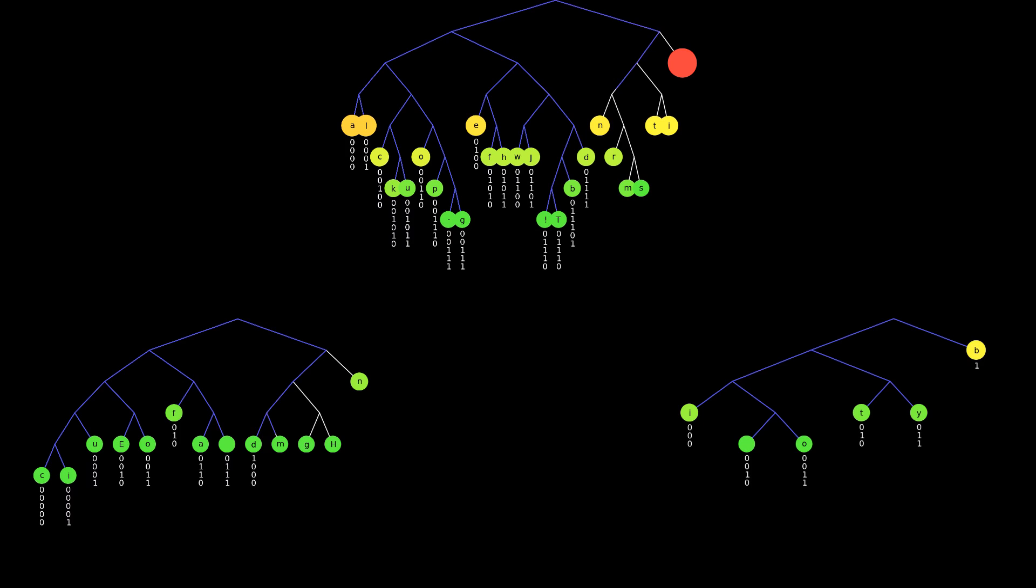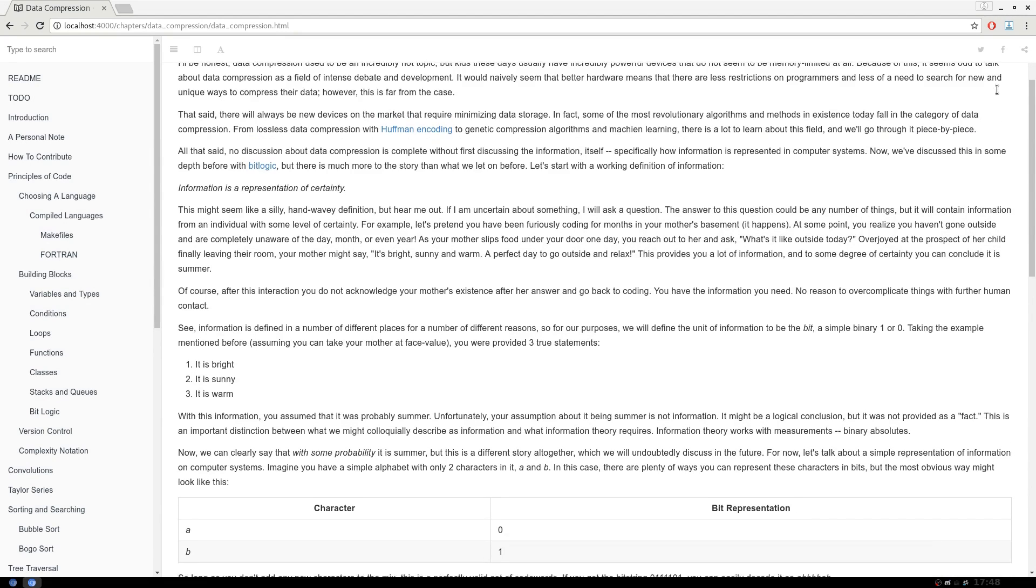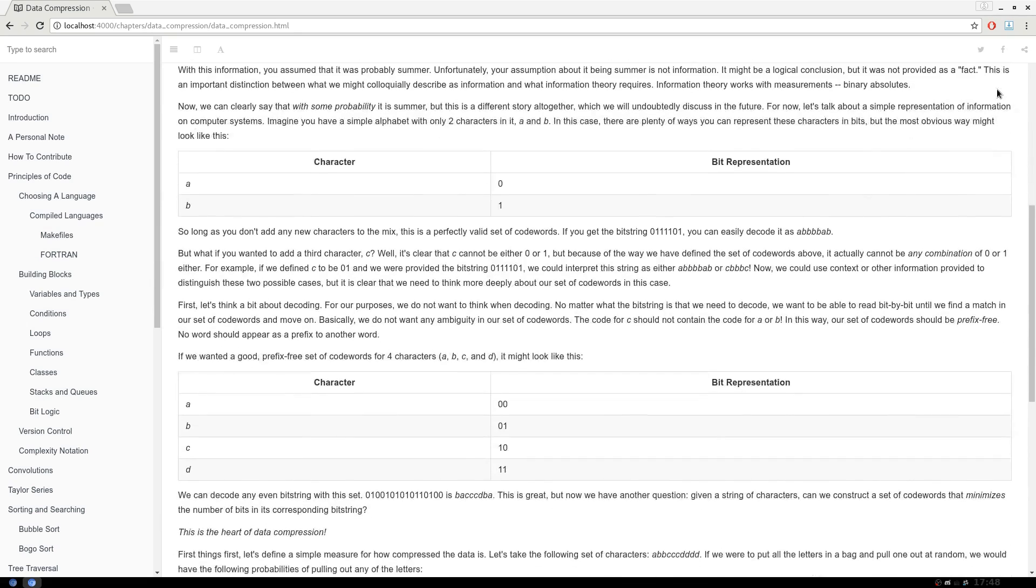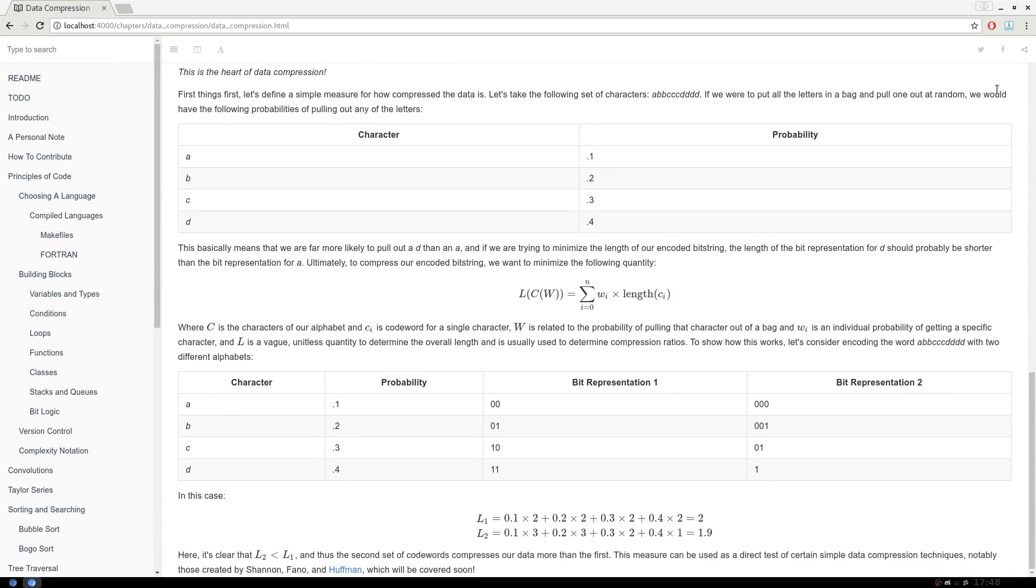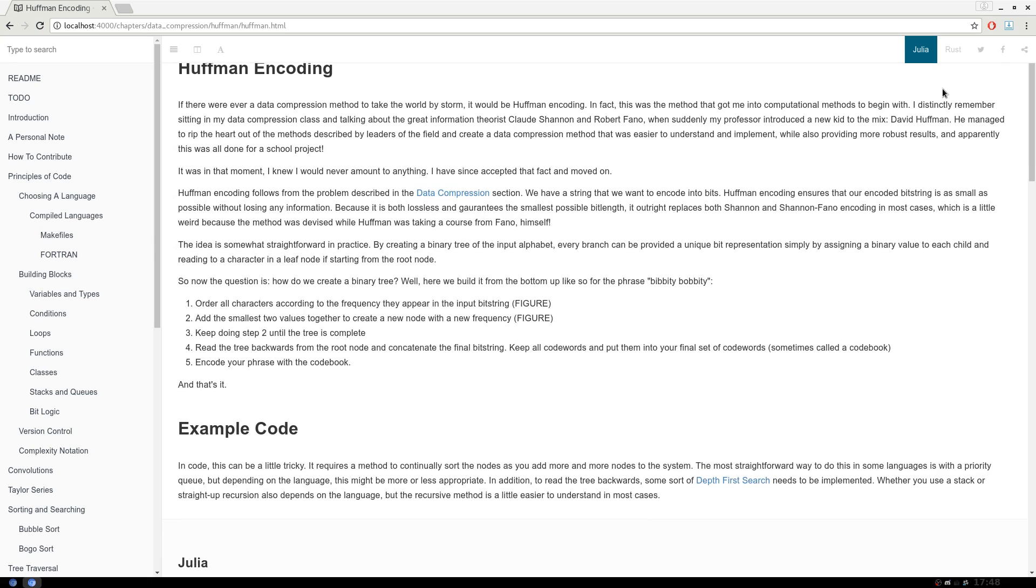Obviously, Huffman trees vary a bunch depending on what you want to encode, and that's kind of the point. In the future, we will definitely cover variations on this method, but for now, there's a lot of extra information in the algorithm archive, including a measure to tell how optimal your code book is, notes on prefix-free codes, and implementation details.